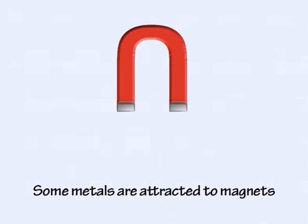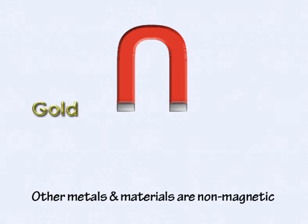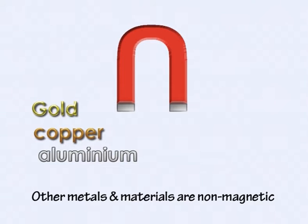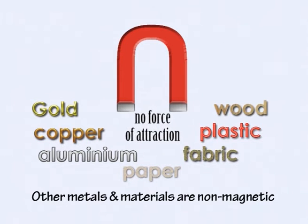Only some metals, including iron, nickel, cobalt and iron alloys such as steel are magnetic. Metals such as gold, copper and aluminium and materials such as paper, fabric, plastic and wood are not attracted to magnets.